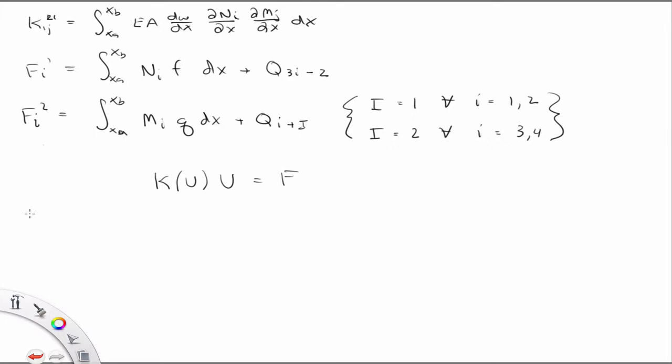So one way to solve this is to use an iterative technique. We can evaluate K(U) at a step N and solve for U N plus 1. So the solution N plus 1 is equal to the inverse of K(U) at N times F.